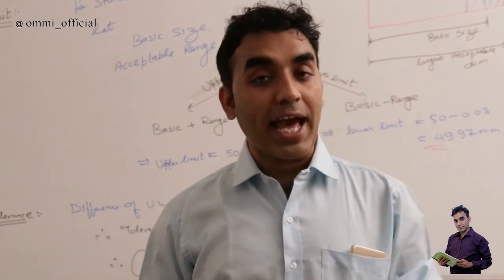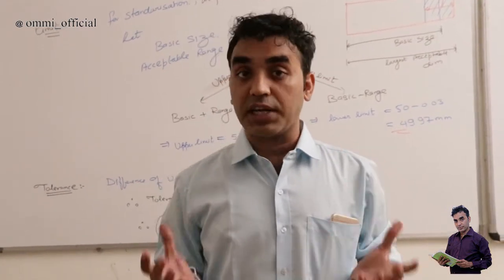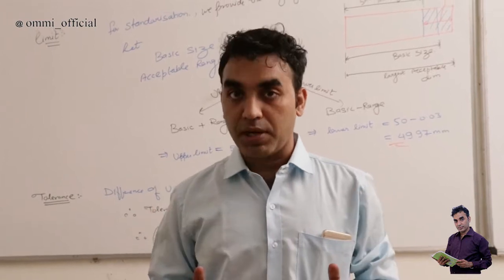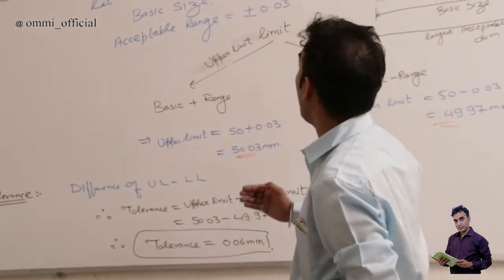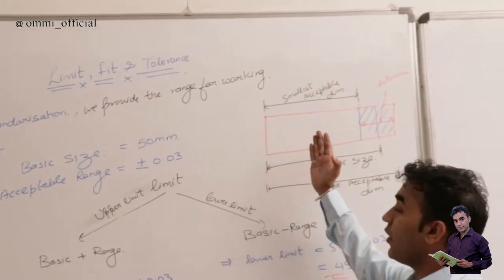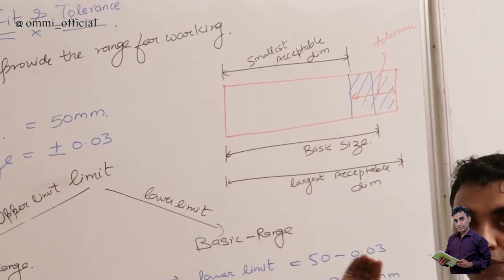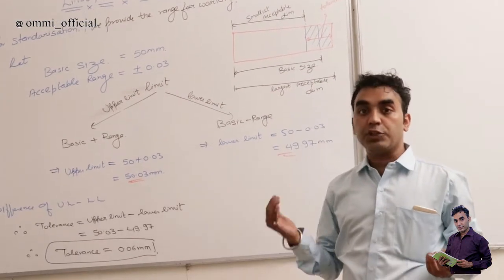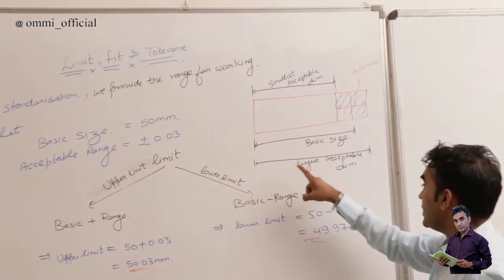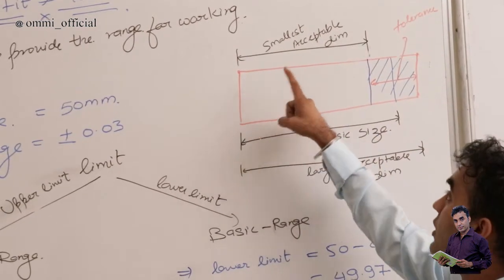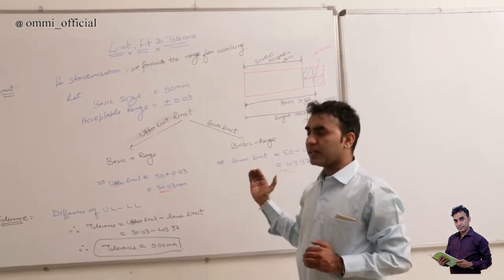Hello friends, now we are on the next topic: limit, fit and tolerance. In all companies, we are seeking standardization, meaning goods should be in an acceptable range. For that we have these three terms: limit, fit, and tolerance. Looking at this diagram, the specimen has a basic size, but during various operations the size may vary and go for rejection. So to avoid that, we give the largest acceptable dimension and the smallest acceptable dimension, and the difference of these two dimensions is known as tolerance.